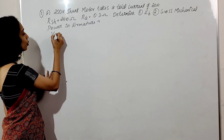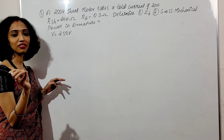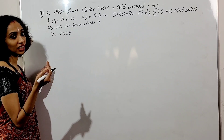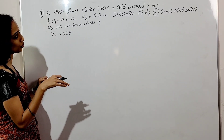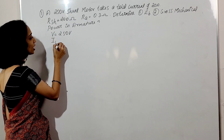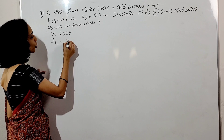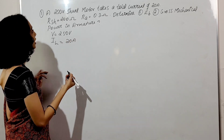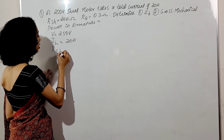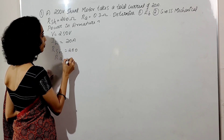V is equal to 250 volt. IL, the line current taken by the motor — the total input electrical energy, that means the line current — is given. RSH is 200 ohm, RA is 0.3 ohm.